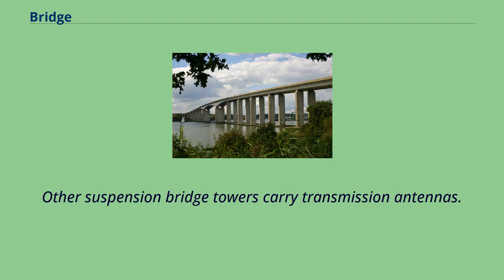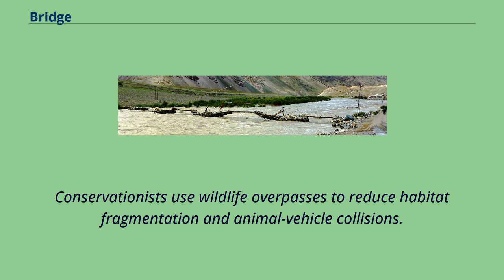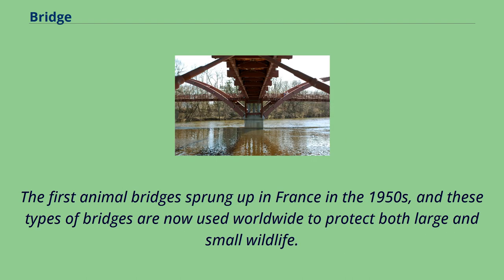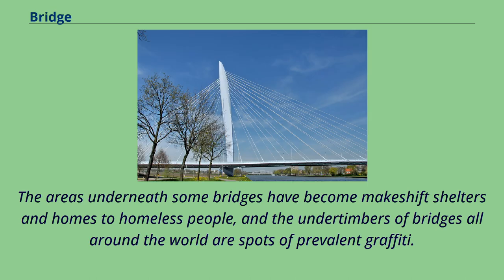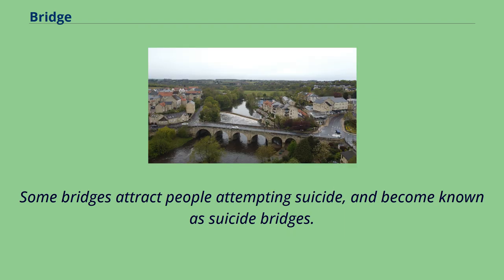Other suspension bridge towers carry transmission antennas. Conservationists use wildlife overpasses to reduce habitat fragmentation and animal-vehicle collisions. The first animal bridges sprung up in France in the 1950s, and these types of bridges are now used worldwide to protect both large and small wildlife. Bridges are subject to unplanned uses as well — the areas underneath some bridges have become makeshift shelters and homes to homeless people, and the under-timbers of bridges are spots of prevalent graffiti. Some bridges attract people attempting suicide and become known as suicide bridges.